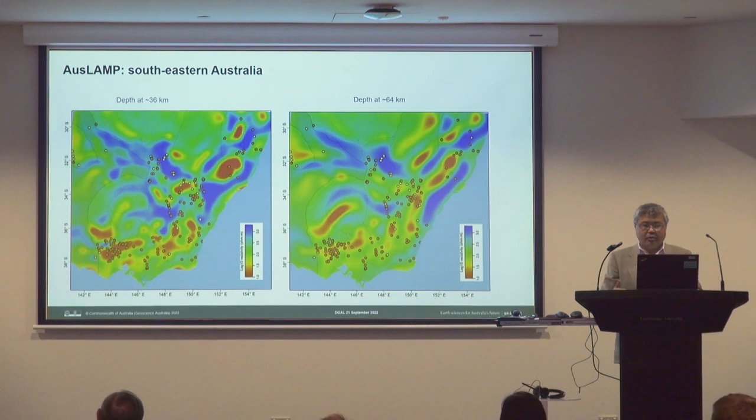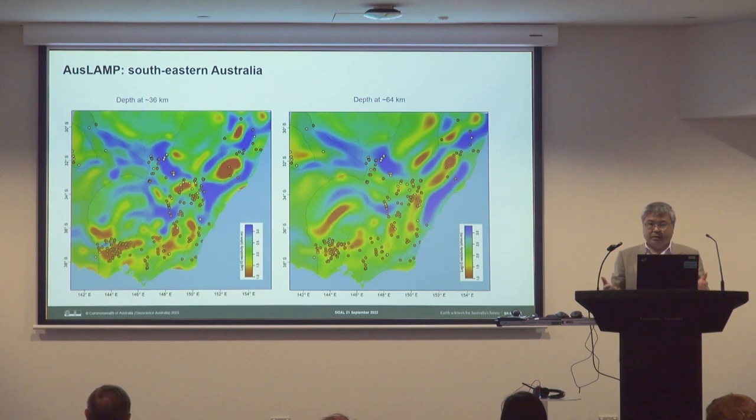If we plot the copper and gold deposits on top of this resistivity structure, we can see a quite nice spatial correlation between the conductivity anomaly and the gold and copper deposits. The majority of gold and copper deposits are seen above the conductivity anomaly or at the gradient of the conductivity contrast. Can we see this in other places and other regions? This is in the Southeast region, so let's move to North Australia.